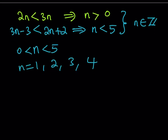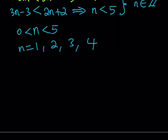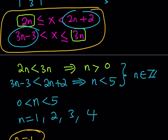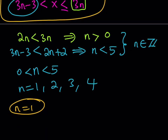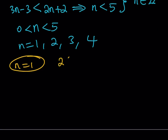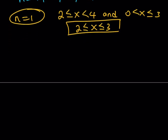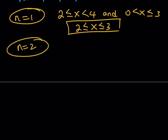Let's examine each case. If n equals 1, substituting into the inequalities gives 2 ≤ x < 4 and 0 < x ≤ 3. The intersection is 2 ≤ x ≤ 3. For n equals 2, we get 4 ≤ x < 6 and 3 < x ≤ 6. Notice the two intervals are always 2 apart and 3 apart respectively. The intersection gives 4 ≤ x < 6.